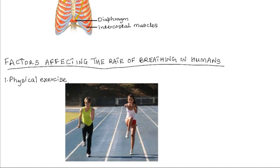The faster rate of breathing supplies oxygen to the tissues for respiration, because when we exercise vigorously, there is an increase in oxygen demand by the tissues, especially the muscles. So faster breathing increases the supply of oxygen to the tissues, allowing more energy to be released to sustain these vigorous physical activities. Also, faster breathing eliminates the excess carbon dioxide produced by the increased rate of respiration.